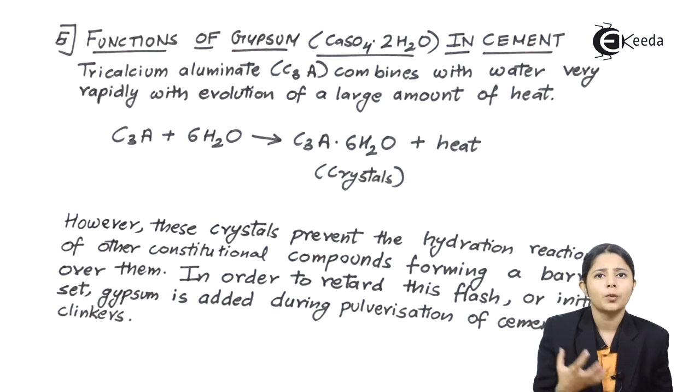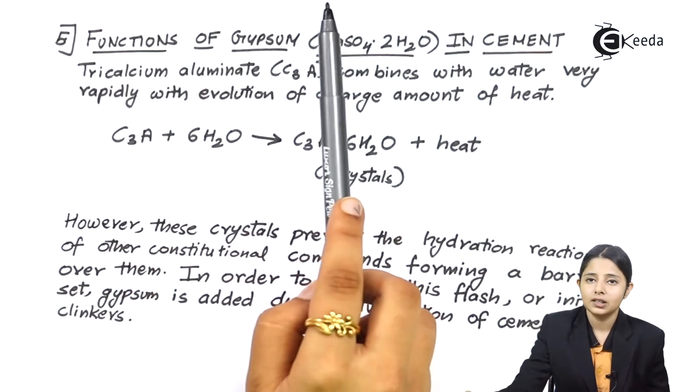This water helps in forming that element into crystals. Therefore gypsum will be in the form of crystals because of the 2H2O present in it. And that 2H2O is nothing but water of crystallization.